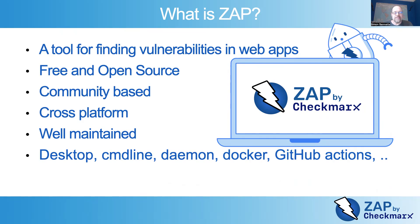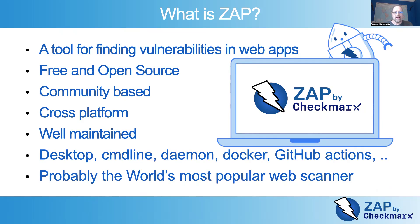Zap can run as a desktop. It can run from the command line. It can run in daemon mode. It can run in Docker and GitHub Actions. There are lots of different ways to run Zap depending on your requirements. And Zap is probably the world's most popular web scanner. It is used by many of the biggest companies in the world, including those in the technology and financial areas.